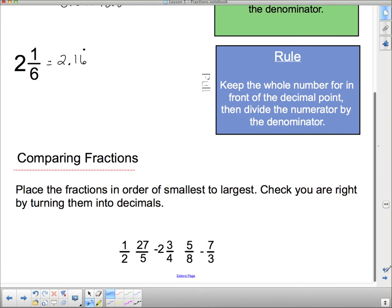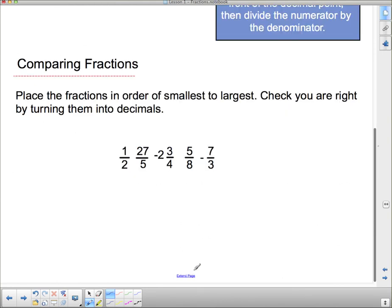So, how about comparing fractions? Place fractions in order of smallest to largest. Check you are right by turning them into decimals. So, we're going to have a quick look at these things and see if we can figure out which is going to be smallest and which is going to be largest. Now, first of all, I've got two negatives. So, I know that the negatives have to be really small. And then the three other numbers, I don't know what order they're going to go in, but they're all positives. So, I'm going to put them over here in the positives. So, let's deal with the negatives first.